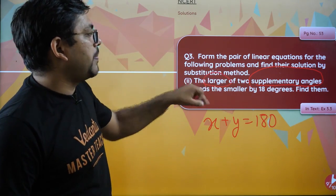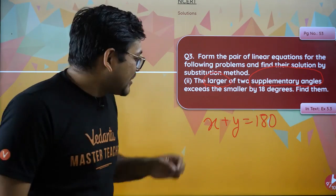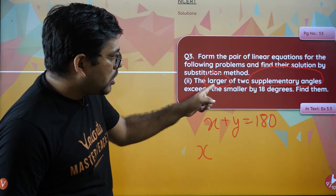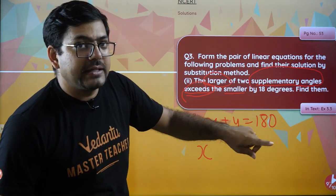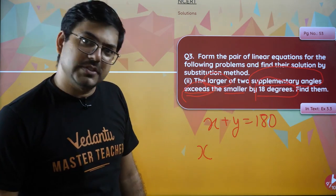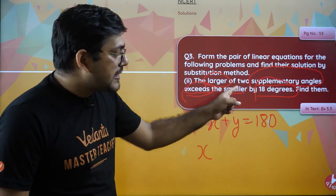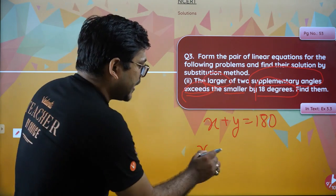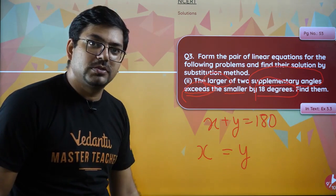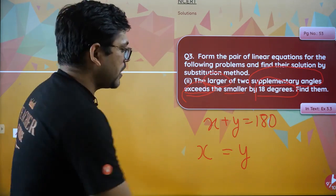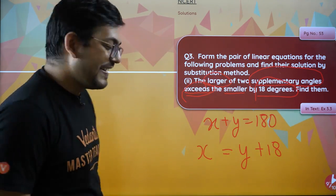Now, the larger of the two supplementary angles — I still don't know if x or y is larger, so let's assume x is the larger angle. The larger x exceeds the smaller y by 18 degrees. So if I want to make them equal: smaller + 18 = larger, meaning y + 18 = x. So x = y + 18. Now substituting this into the first equation: (y + 18) + y = 180.